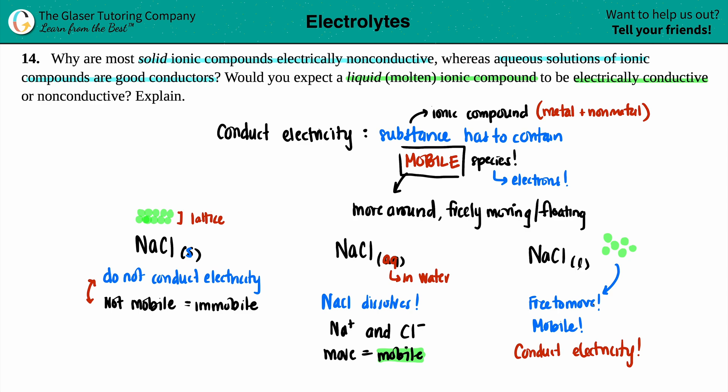So that's basically this question in a nutshell. So all ionic solids, they're immobile, can't conduct electricity. But if you have aqueous, if you have liquids for your solids, they will conduct electricity because those species are mobile. They're able to move around. And that's it.